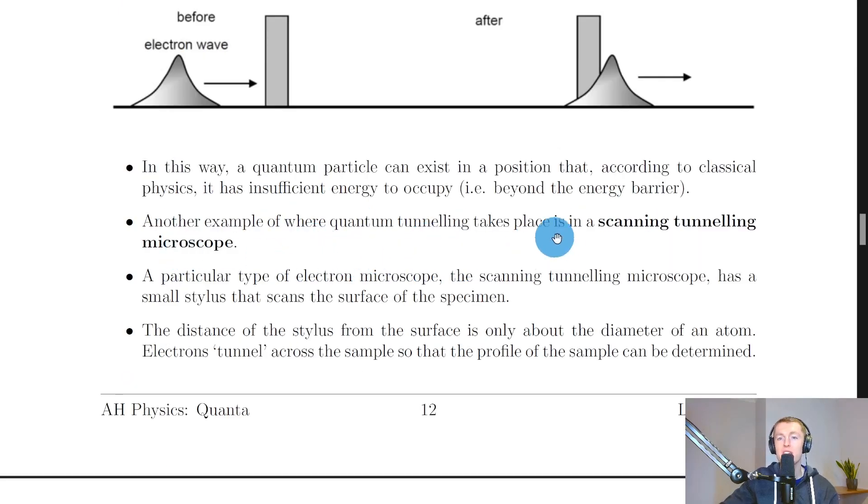Another example of where quantum tunneling takes place is in a scanning tunneling microscope. A particular type of electron microscope, the scanning tunneling microscope has a small stylus that scans the surface of a specimen.